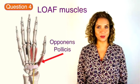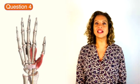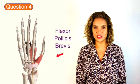O stands for opponens pollicis, A abductor pollicis brevis and F flexor pollicis brevis. These last three muscles form the thenar eminence which is this fleshy bulk of muscle that you can feel in your hand.